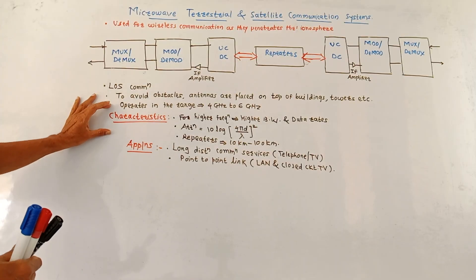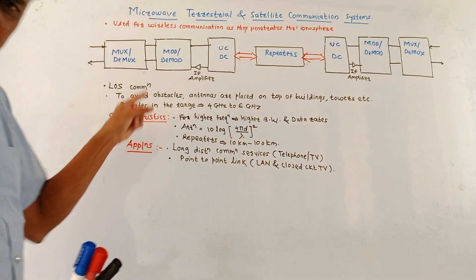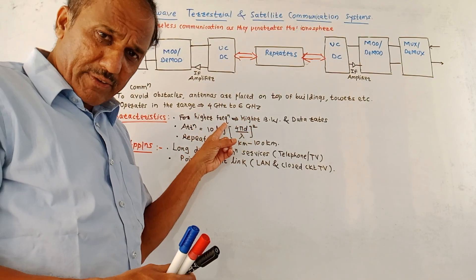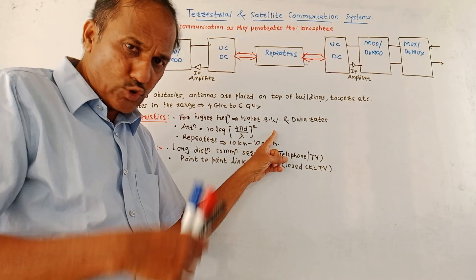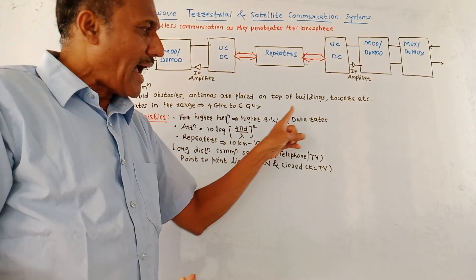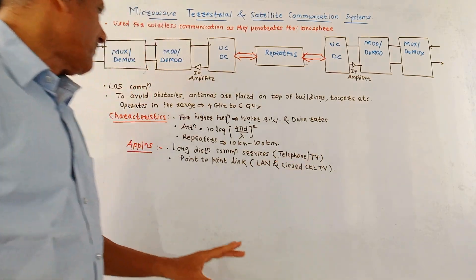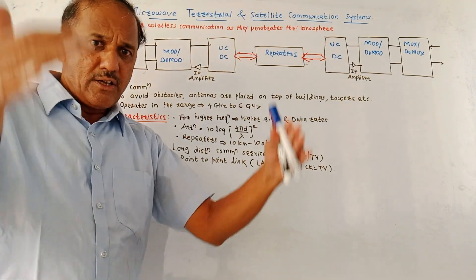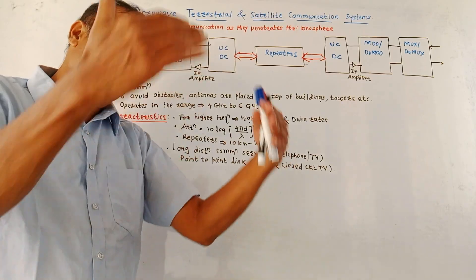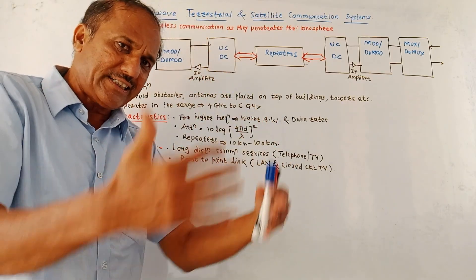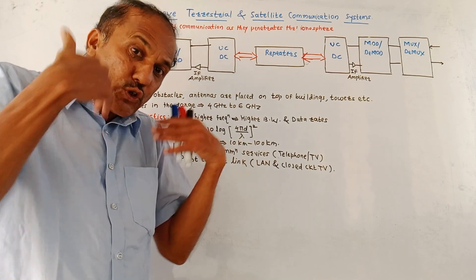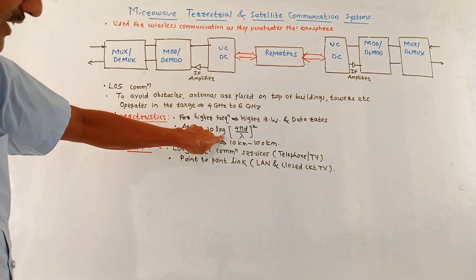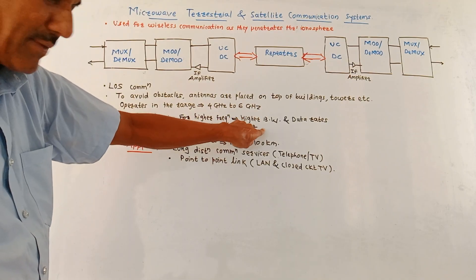The major characteristics include: as frequency increases toward microwave frequencies, bandwidth also increases, producing higher bandwidth and higher data rates. As for attenuation, different obstacles and other factors reduce the strength of the signal. This attenuation is given by 10 log(4πd/λ)² in decibels, where lambda is the operating wavelength and d is the distance.